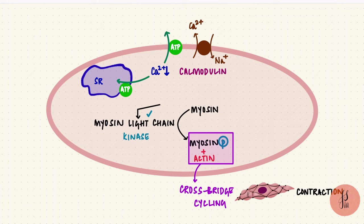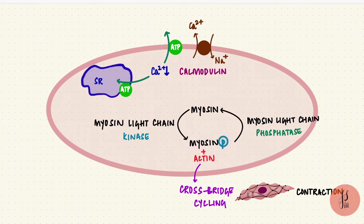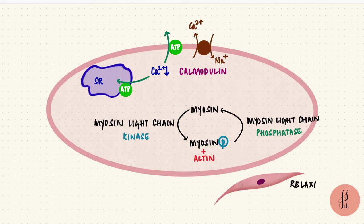But just that isn't enough for the muscle to relax. The myosin is still phosphorylated. For it to become inactive again, it needs to get dephosphorylated. That is by another enzyme, the myosin light chain phosphatase, which removes the phosphate from myosin's regulatory light chain and inactivates it. So the cross-bridge cycling stops and the muscle relaxes.